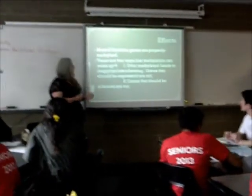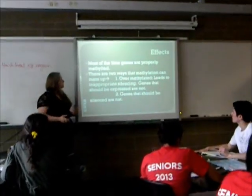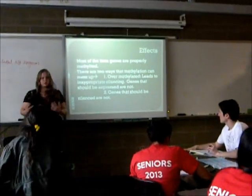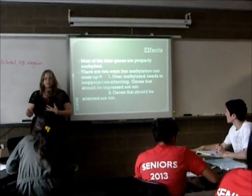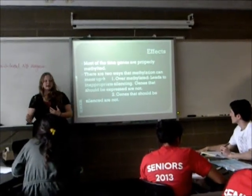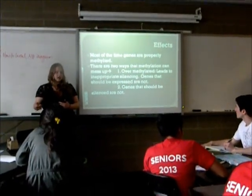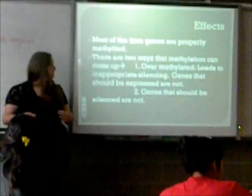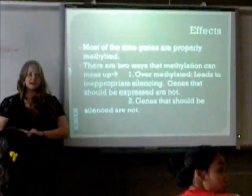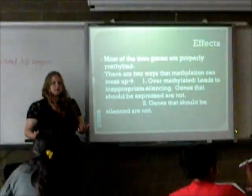There are two ways that methylation can go wrong. You can be over-methylated, which means that genes that should be expressed are not being expressed — that's inappropriate silencing — and that can cause a lot of different issues. The other way is that genes that should be silenced are not, so you're expressing traits that should typically be silenced.